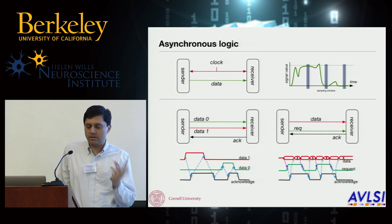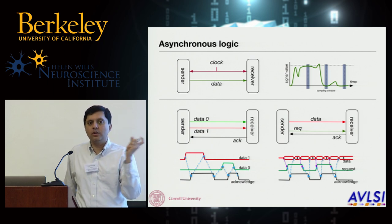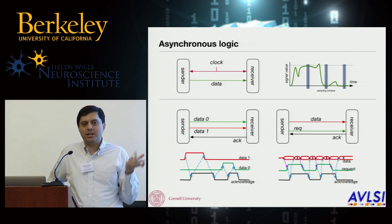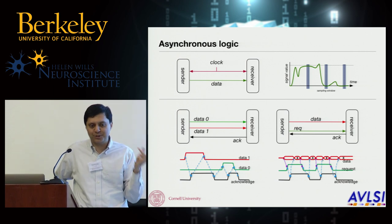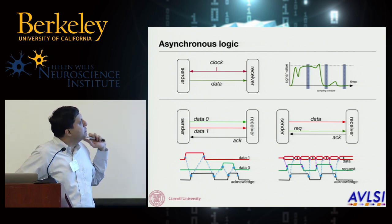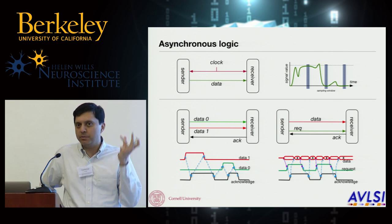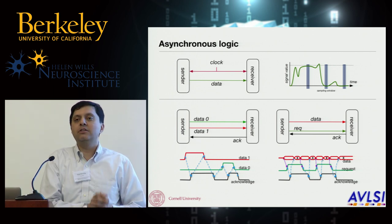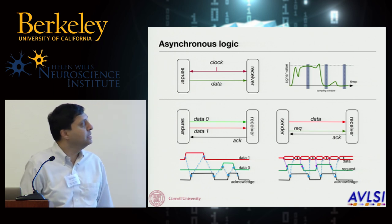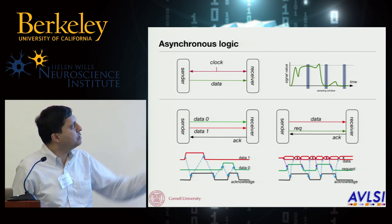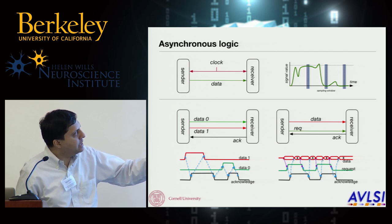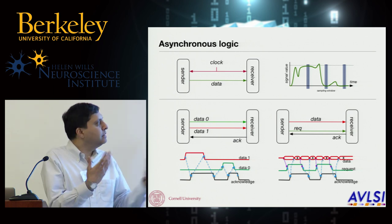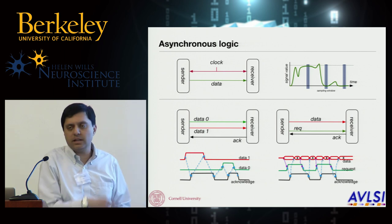In the asynchronous world, we don't have a signal that tells us globally when to look at values, so you have to replace that signal with something else. There are a number of different ways to do this — I teach a class on asynchronous computing where I spend a couple of lectures on all the different options. One obvious way is using delay-insensitive codes from information theory, where you encode information so you can correctly read the transmitted value with arbitrary wire delays. Another approach is to send data and then send a separate signal saying 'you can look at the data now,' acting as a local sampling signal.